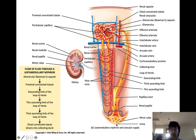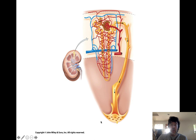Then we have the distal convoluted tubule. The distal convoluted tubule of many nephrons feeds into a large duct called the collecting duct, which is the final segment of the nephron. If fluid remains in the collecting duct and eventually empties into the minor calyx, it's no longer called filtrate — the moment that fluid exits the nephron it's called urine, and it enters into those urine collection pathways.